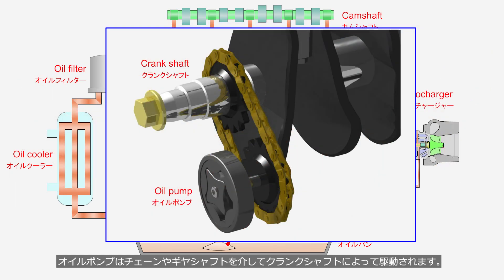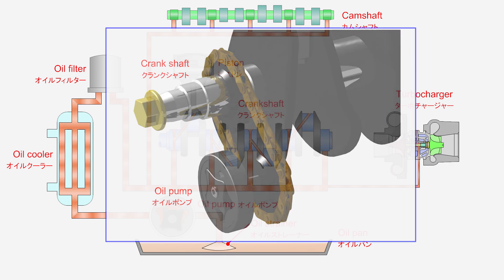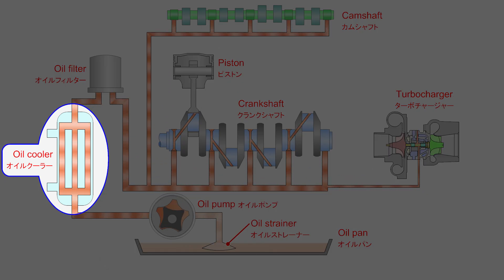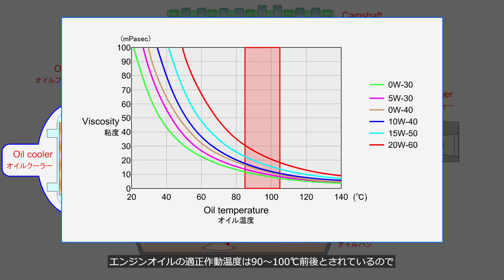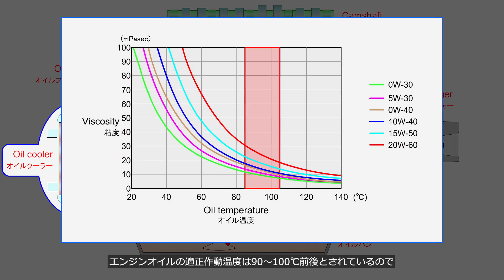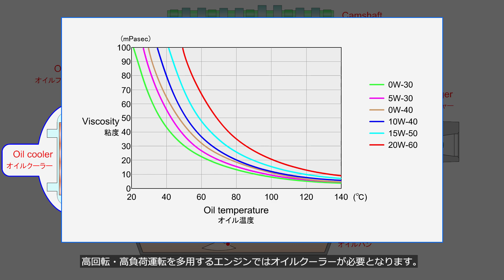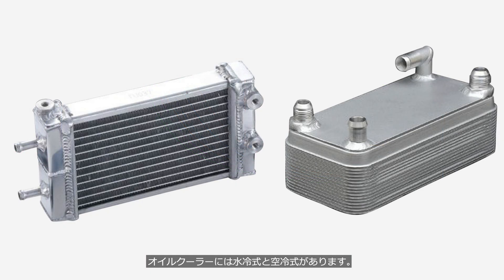The oil pump is driven by the crankshaft via a chain or a gear shaft. Some engines are equipped with an oil cooler downstream of the oil pump. The optimal operating temperature for engine oil is considered to be around 90 to 100 degrees Celsius, so an oil cooler is necessary for engines that frequently operate at high rotational speeds and under heavy loads. There are two types of oil coolers: liquid cooled and air cooled.